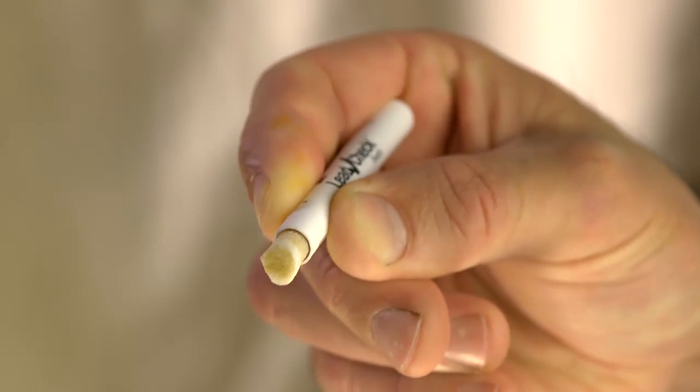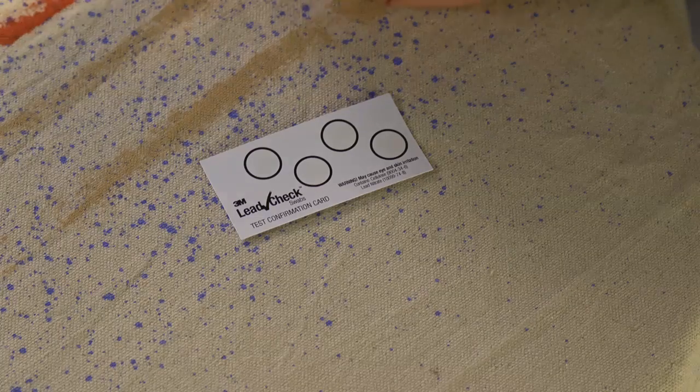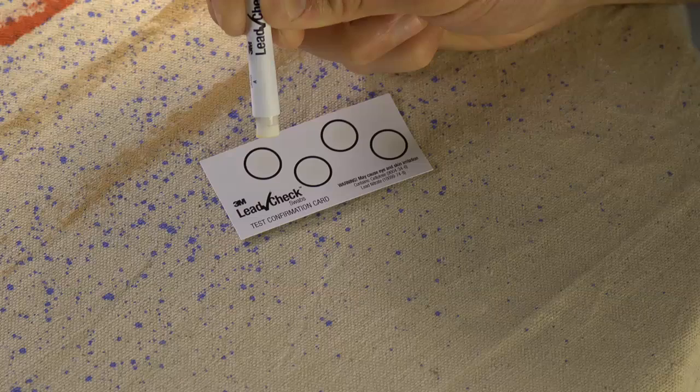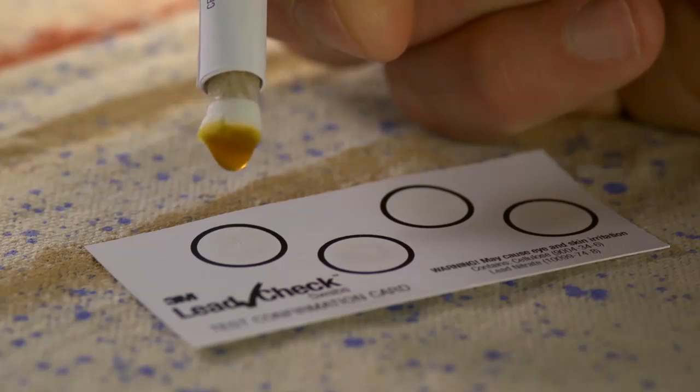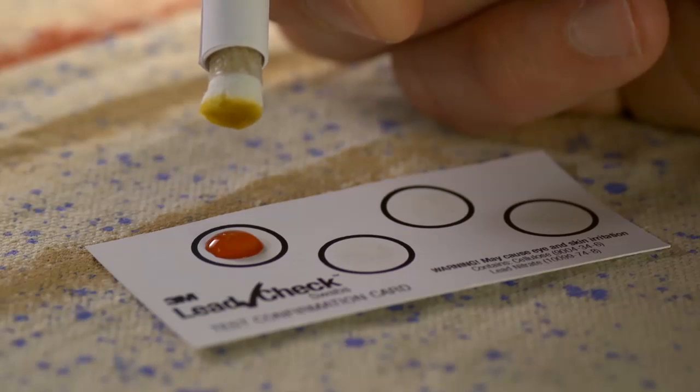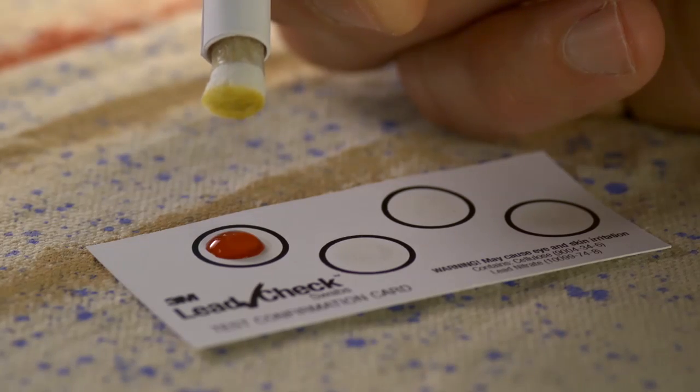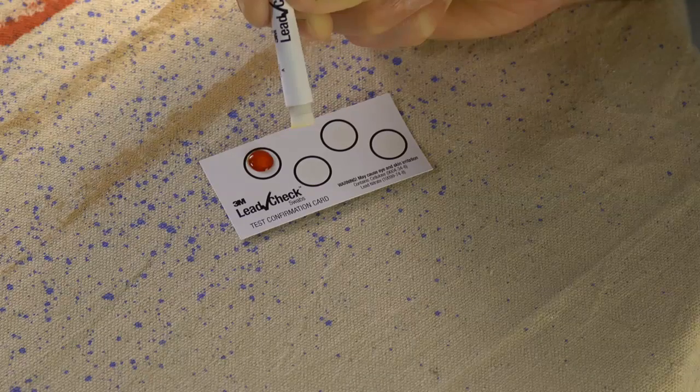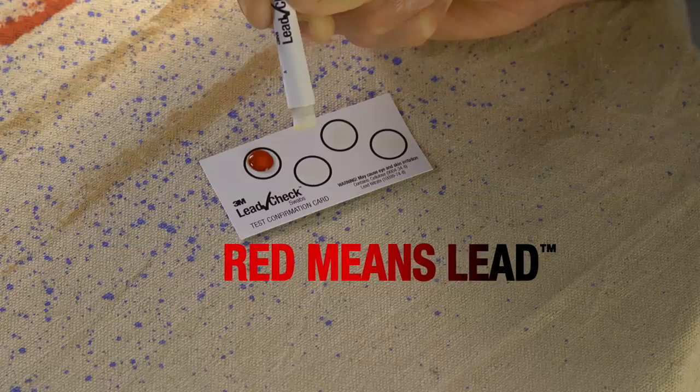If no pink or red color develops, immediately confirm the negative result by squeezing a drop of the 3M LeadCheck reagent liquid onto one of the test confirmation cards. The circle should instantly turn red. Don't forget, red means lead.